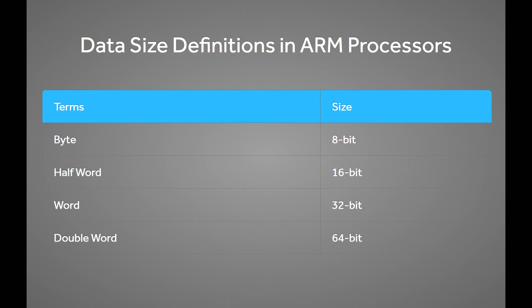Another really useful thing to know is what the data size definitions are in ARM processors. So in ARM processors, a byte is considered as 8-bit, a half word is considered as 16-bit, a word is considered as 32-bit, and a double word is considered as 64-bit.